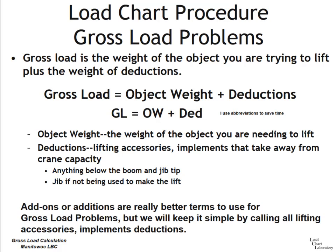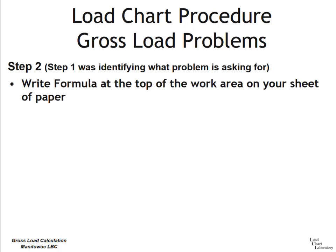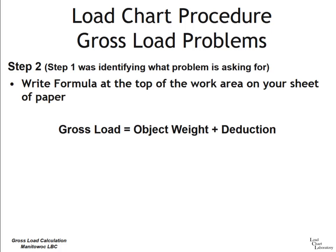Step two is simply writing the formula at the top of the work area on your scrap paper. For the exam you will be given two sheets of paper — four sides to write on — to work out your calculations. Write your formula: Gross load equals object weight plus deductions. The abbreviated form is GL equals OW plus DED.